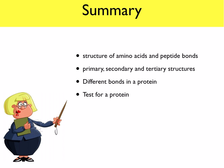In this lesson we've discussed the structure of amino acids, including the different groups and how peptide bonds are formed. We've looked at primary, secondary, tertiary and quaternary structures, as well as the different bonds in these structures. We've also looked at the Biuret test for protein — the Biuret test turns purple when protein is present.